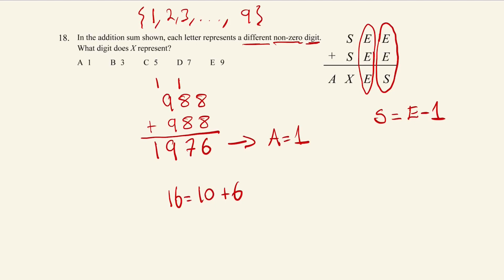We also know that E plus E is going to give us 10 plus S. A bit like how eight plus eight gave us 16, we wrote that as 10 plus six. We can say E plus E is going to give us 10 plus S. If we use what we just found out here, so if we use the fact that S is E take away one and we sub that into here, we replace this S with this E take away one, we can figure out what E is because this is going to be written as 10 plus E minus one.